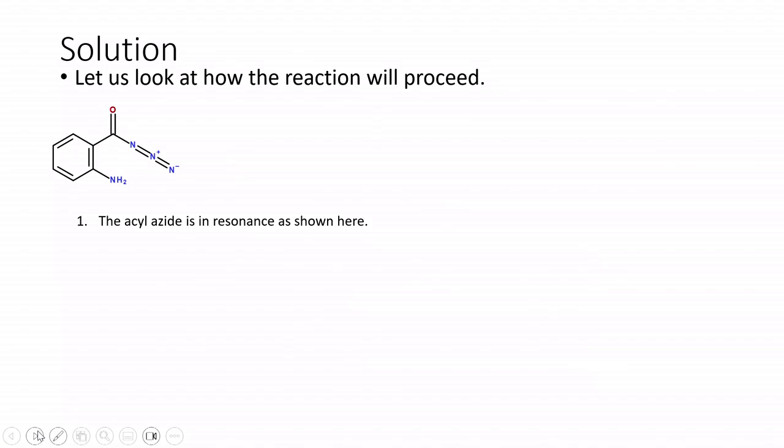Here let us start with the acyl azide. The acyl azide resonance structure is actually shown here. The negative charge will come between these two nitrogen atoms and one of the nitrogen gets the negative charge.